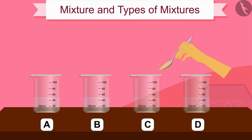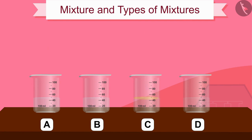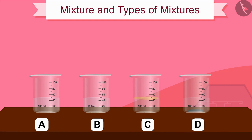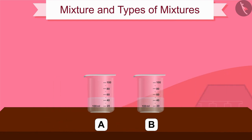Now ask your second friend to dissolve one teaspoon of oil in beaker C, and finally ask the third friend to dissolve one teaspoon of sodium chloride and iron filings in beaker D. Notice the texture of all the blends. Let us first look at the mixtures in beakers A and B.